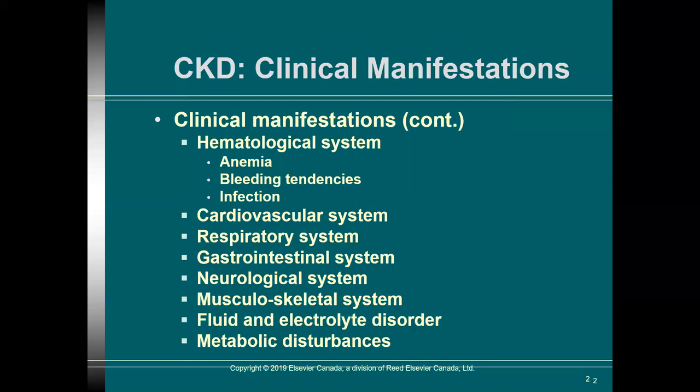Basically, the process we see happening is retained substances — the body is unable to process waste including urea, but also creatinine, phenols, hormones, electrolytes, water, and other substances. What we see ultimately is uremia — a whole bunch of signs and symptoms resulting from the buildup of waste products — and we see excess fluid associated with kidney failure as well.